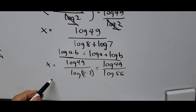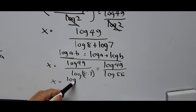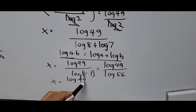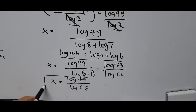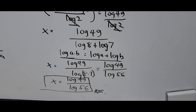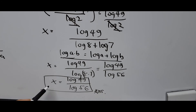So x equals log(49) divided by log(56). That is the exact answer. We can also plug in the values of log(49) and log(56) into the calculator to get the decimal form of x.